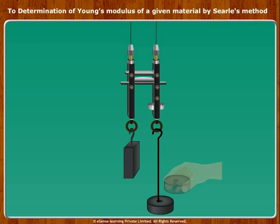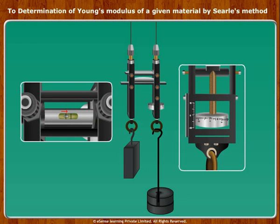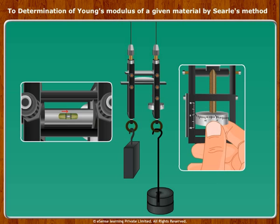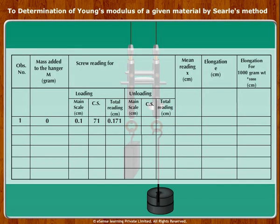Add a weight of 500 grams to the hanger on the experimental wire A. Wait for about 1 minute as the increase in the length of the wire occurs rather slowly. Observe that the bubble in the spirit level has moved from the center. Rotate the screw so that the air bubble in the spirit level is brought back to the center. Note the readings when the air bubble becomes steady.